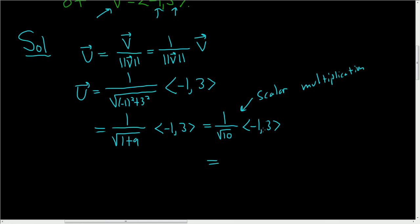So to perform the scalar multiplication, we just take our scalar, which is this number here, and we multiply it by each of the components in the vector. So we end up with negative 1 over the square root of 10 and then 3 over the square root of 10.